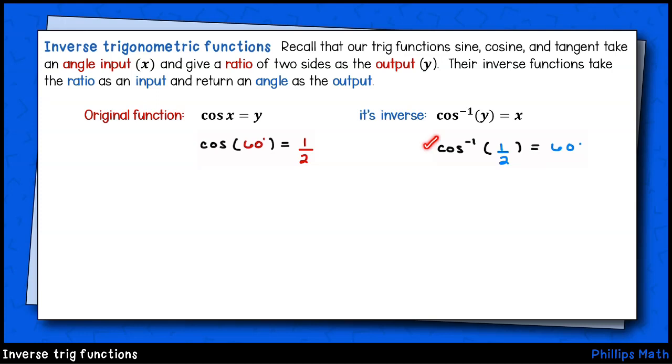Using the inverse cosine function, we instead say that the inverse cosine of one half is 60 degrees. This time, we input the ratio between the adjacent side and the hypotenuse, and the output will be the angle measure itself.